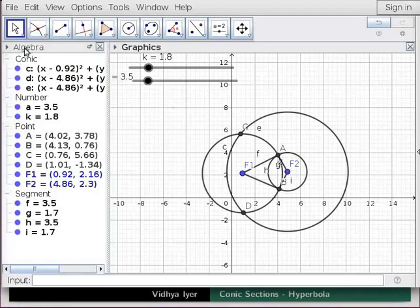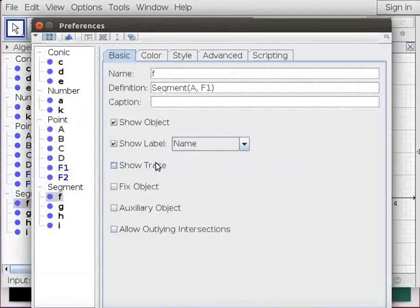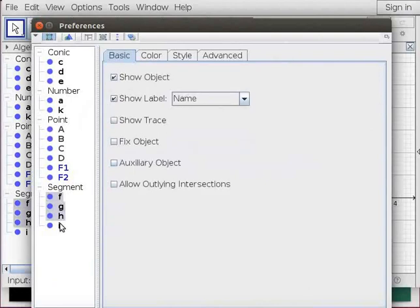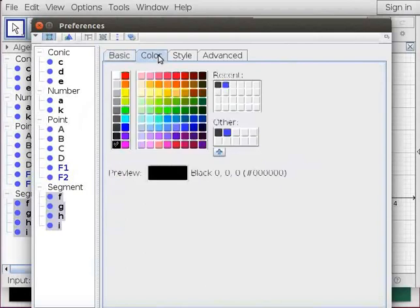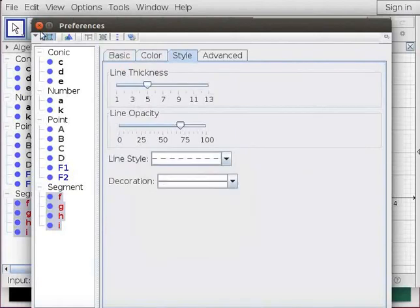Click on Move. Double click on Segment A, F1 and click on Object Properties. In the left panel, Segment A, F1 is already highlighted. Holding Ctrl key down, click and highlight Segments A, F2, B, F1 and B, F2. Under the Basic tab, make sure Show Label is checked. Choose Name and Value from the drop-down menu next to it. Under the Color tab, select Red. Under the Style tab, select Dashed Line Style. Close the Preferences box.